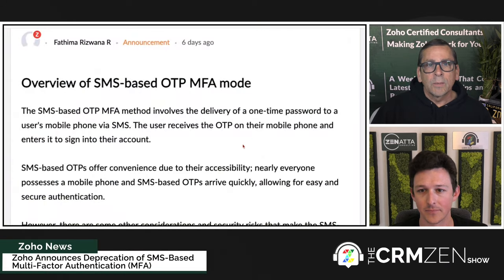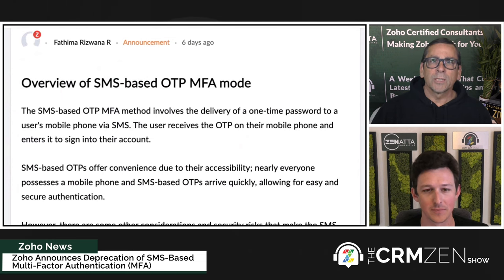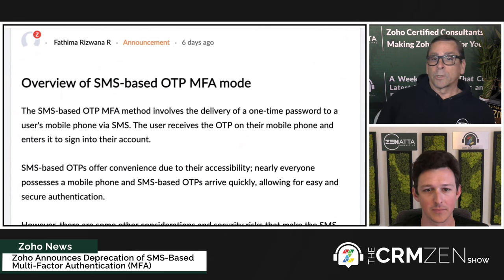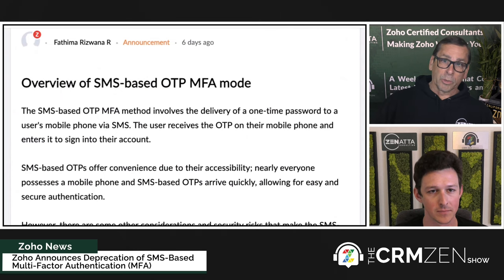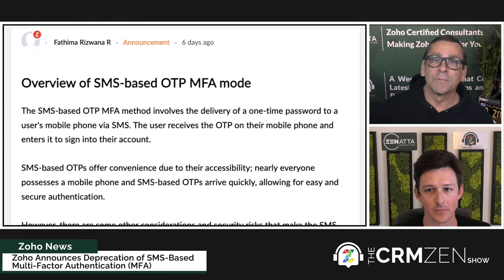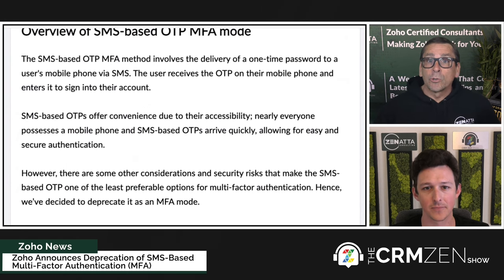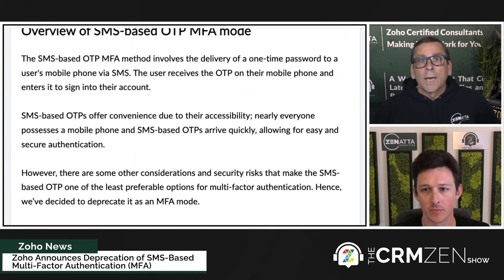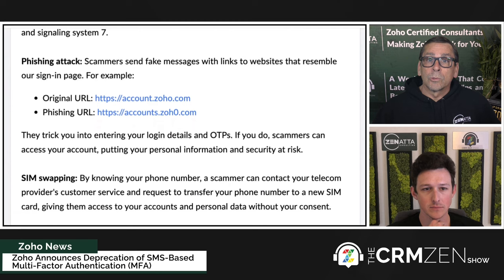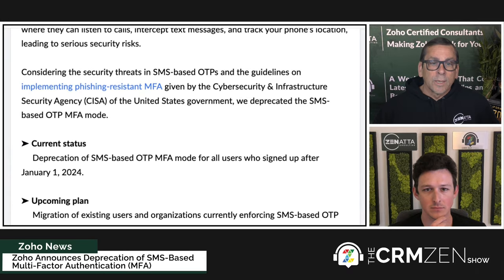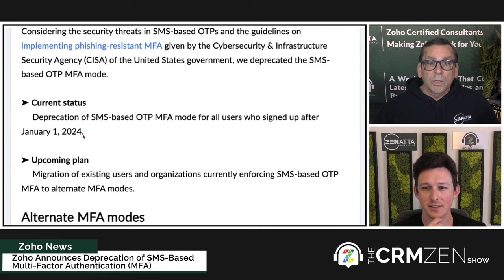In one of the most bizarre decisions Zoho has ever made, they are going to eliminate SMS-based OTP. For the life of me, I don't understand the logic behind this. SMS-based OTP is where you get something to your mobile phone — a six-digit or ten-digit code — you type it in and it lets you in. So after you put your name and password in, you get a code. Is it the best form of two-factor authentication? No, but it's better than nothing. Zoho does let you turn off two-factor authentication completely, but now you can't use text-based. They don't say when this is going to happen — I went through the article and it doesn't give a date. It's just the deprecation of SMS-based OTP.